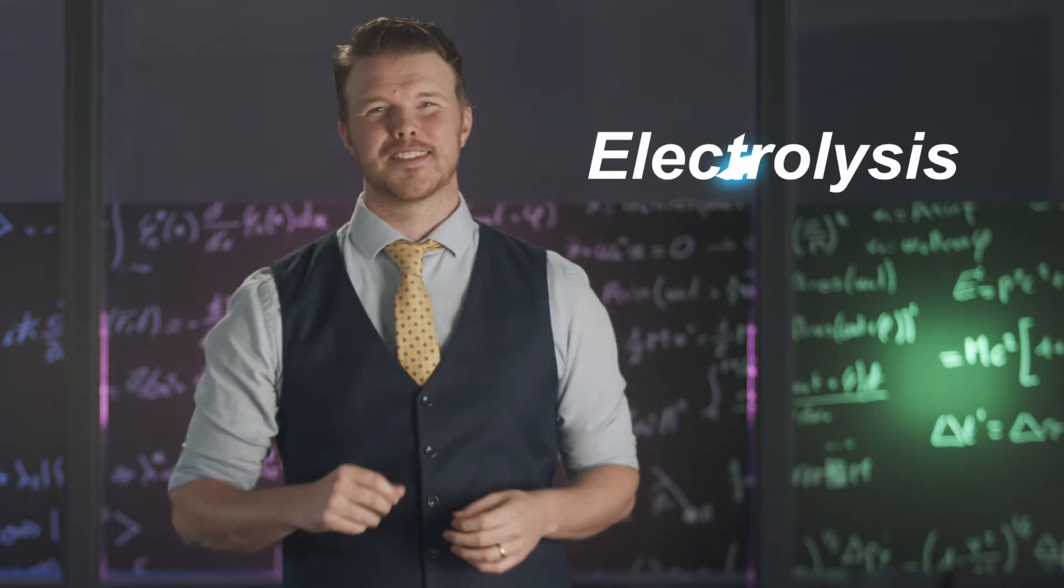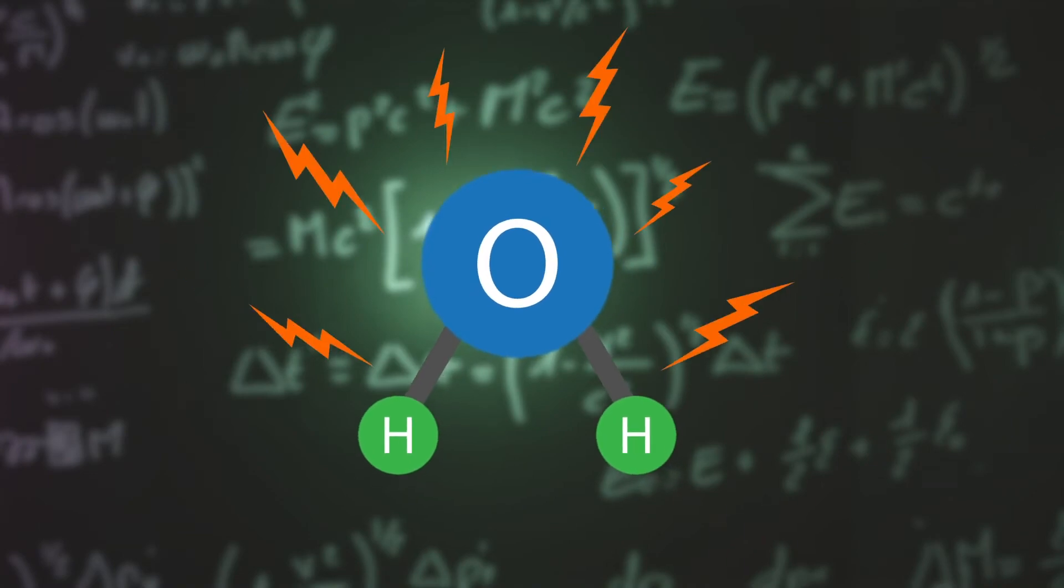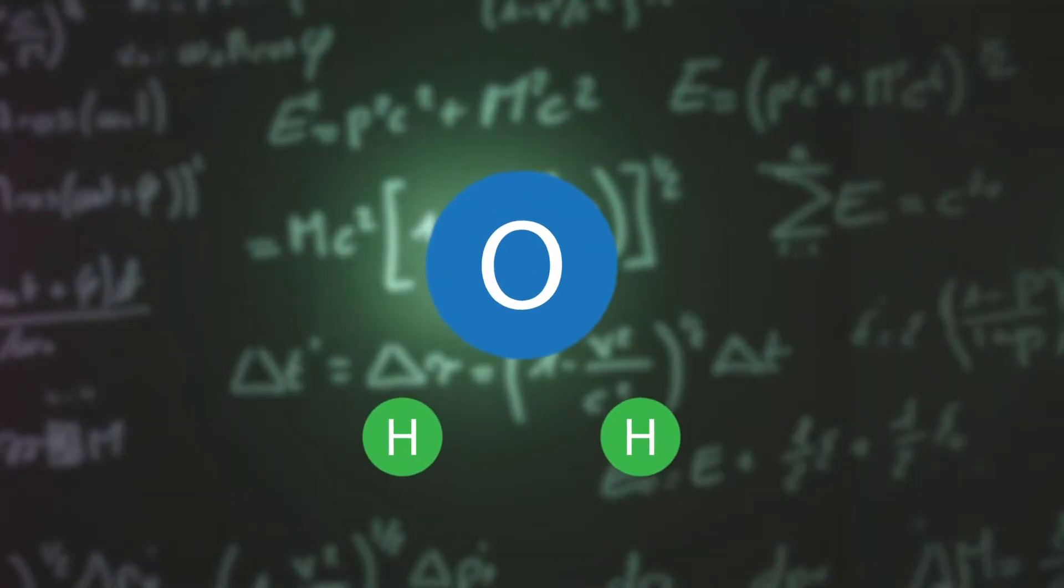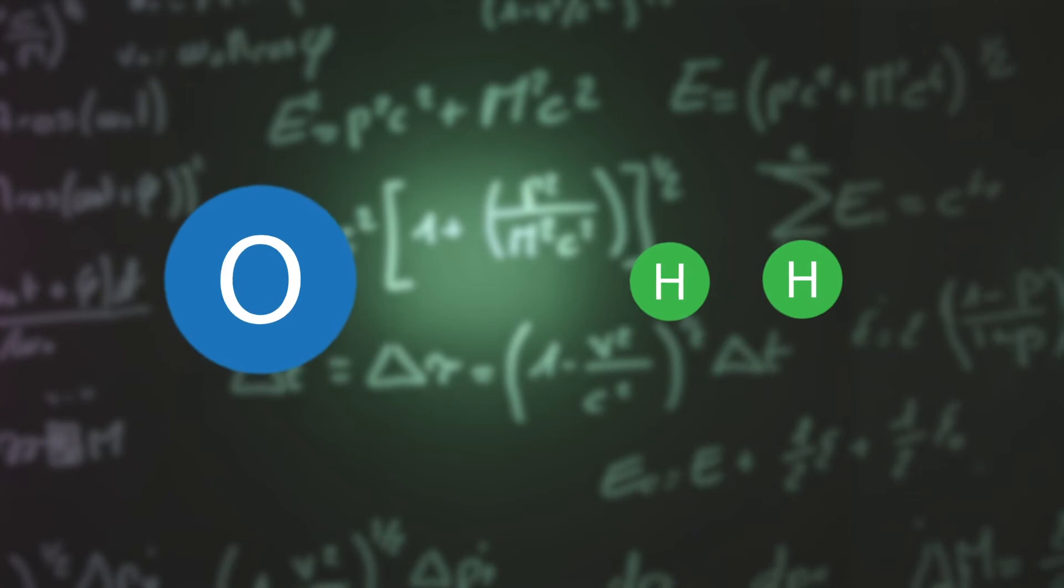How? Electrolysis. Let's go to the big board. Electrolysis uses electricity to break the bonds between hydrogen and oxygen.